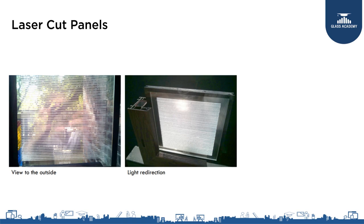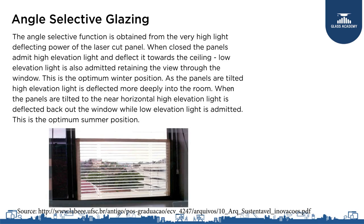Another picture shows the view to the outside and the reflected light. If we put this type of laser cut panels as slats, then we can rotate these slats and control the direction of the reflection of the light. And obviously, the reason we want to control this is because the solar altitude changes across the seasons.